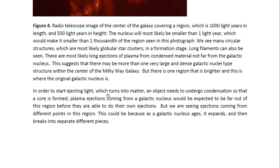In order to start ejecting light which turns into matter, an object needs to undergo condensation so that a core is formed. Plasma ejections coming from a galactic nucleus would be expected to be far out of this region before they are able to do their own ejections. But we are seeing ejections coming from different points in this region. This could be because as the galactic nucleus ages, it expands and then breaks into separate different pieces.